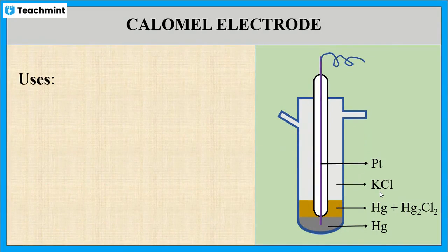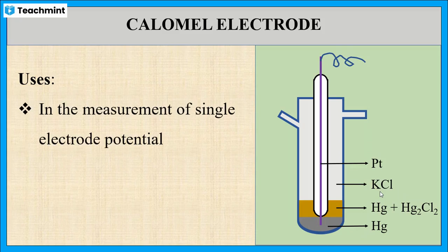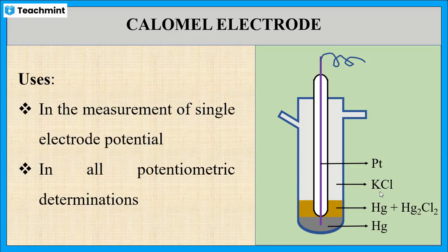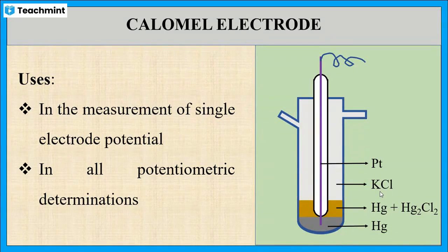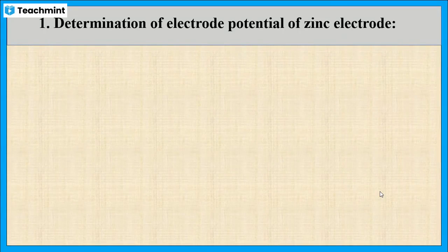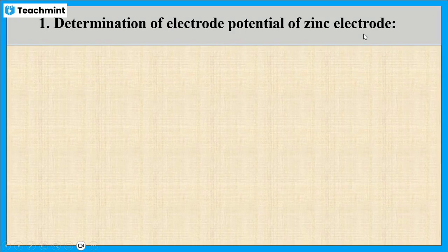Now let us see the uses of the calomel electrode. One use is that it is used in the measurement of single electrode potential. It is also used in all potentiometric determinations. It is also used for pH estimation. The first application we will look at is using the calomel electrode to determine the electrode potential of the zinc electrode.